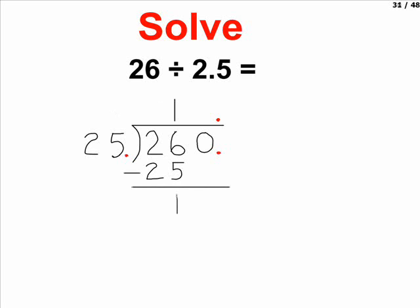We drop down our next digit in line, which is a zero. Now that gives us 10. Now 25 cannot go into 10 even once, but to hold our place value, we have to write a zero in that spot. And zero times 25 is zero, which still leaves us with 10.